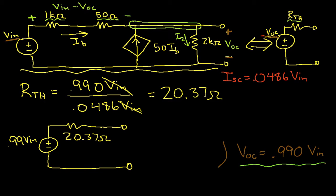And that pretty much does it. You can see that the circuit does not change, or its output voltage is almost the same as its input voltage. And it has an output resistance of 20.37 ohms.